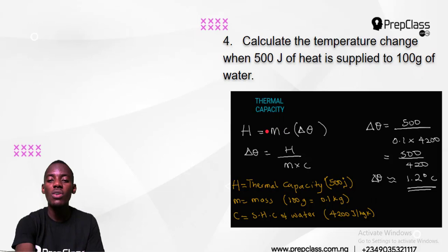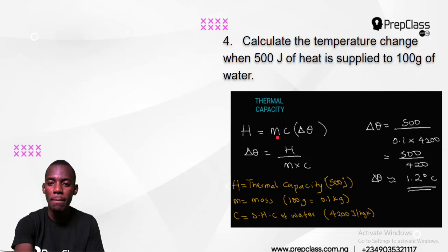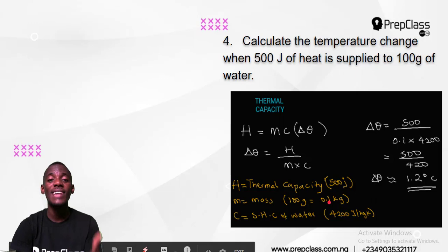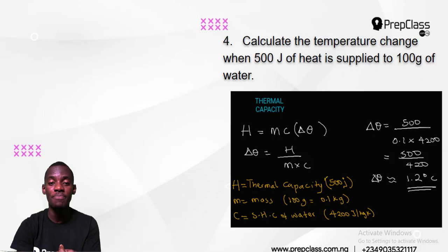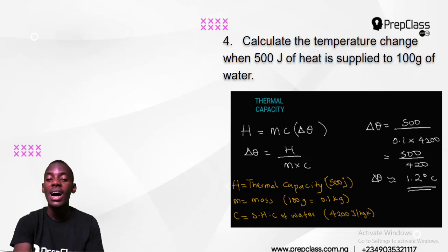H equals MC theta, where theta is the change in temperature. H is the heat capacity — 500 joules in this question. M is the mass — 100 grams, which is 0.1 kilograms. Divide by 1,000 to convert grams to kilograms, because mass is not measured in grams — you must change it into kilograms. 100 divided by 1,000 gives 0.1 kilogram.